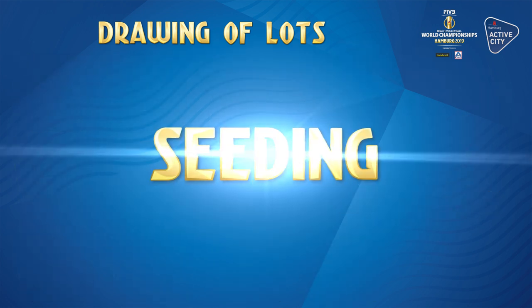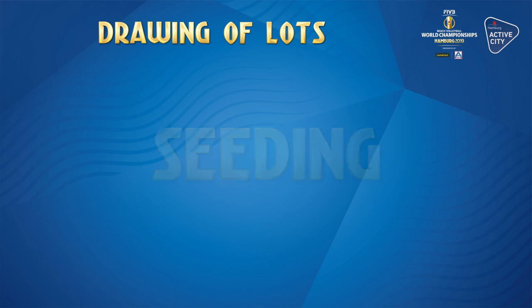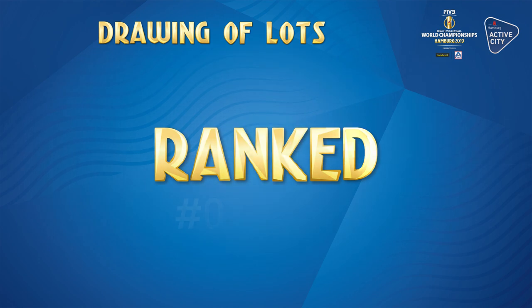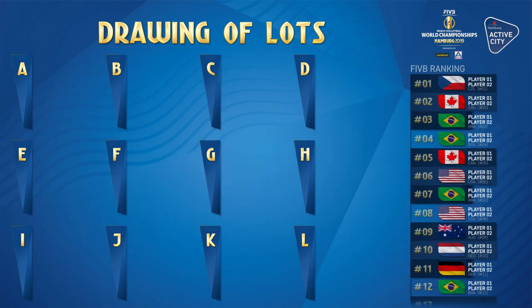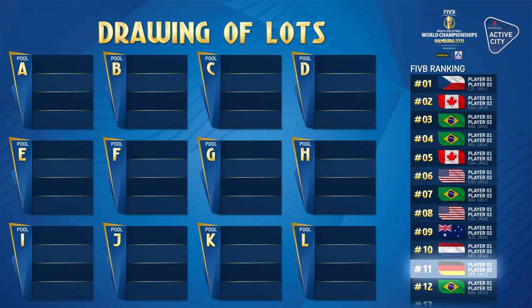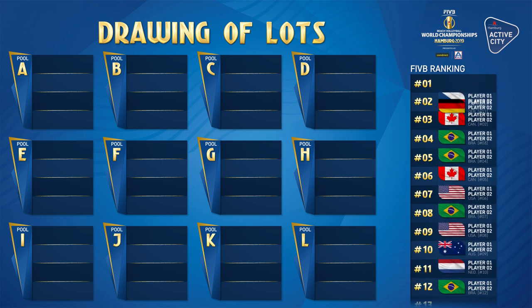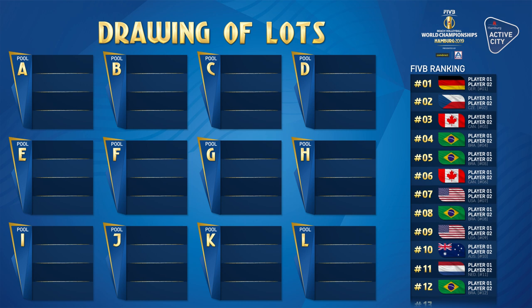Each team's seating is determined by their performance on the FIVB World Tour and are ranked accordingly from 1 to 48. The top-ranked team from Host Nation Germany will be seated No. 1 if they are among the top 12 in the seating list. If they ranked below the top 12, they will be seated 12. The other host country teams taking part will be placed as per their natural seating.